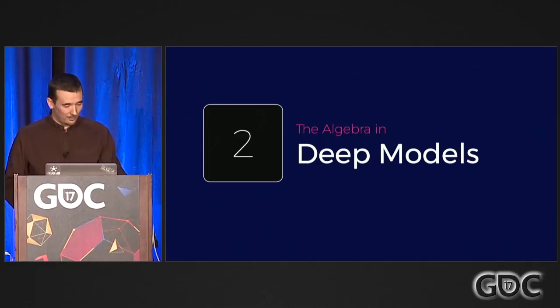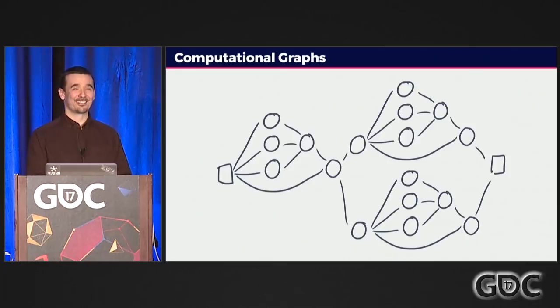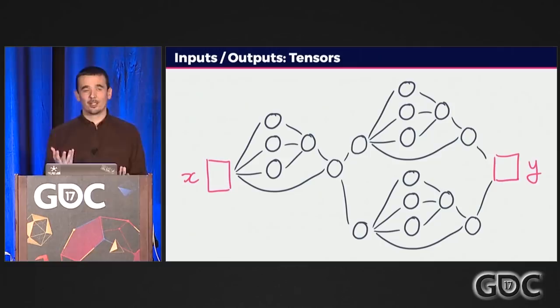Now we have this data, we can basically feed it into deep learning models. I like to think of these models as computational graphs — not 'biologically inspired'; deep learning has progressed way beyond that. These models are very large computation graphs that take some input and produce some outputs with steps of operations in between. On the left side we have our input X, which is typically a tensor — a 2D matrix for an image, a 3D matrix for a batch of images, or a 4D matrix for a batch of videos.